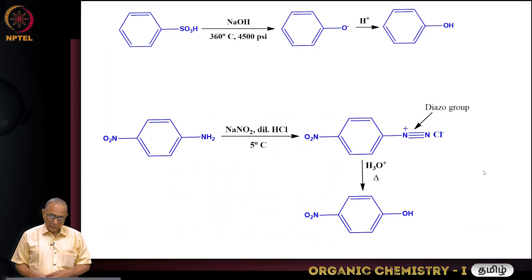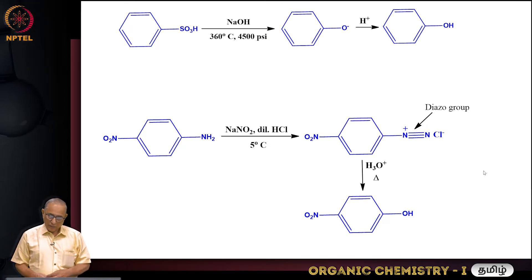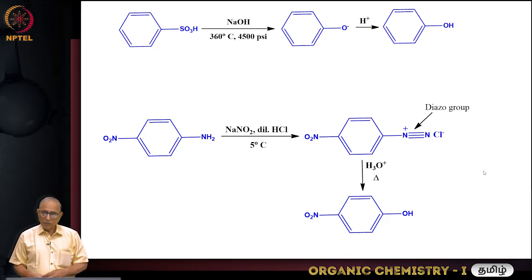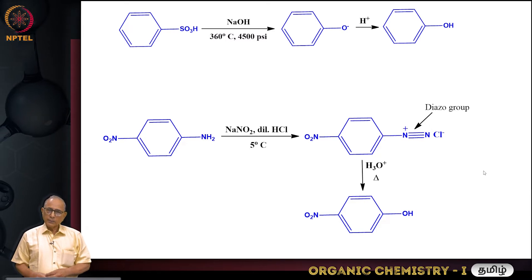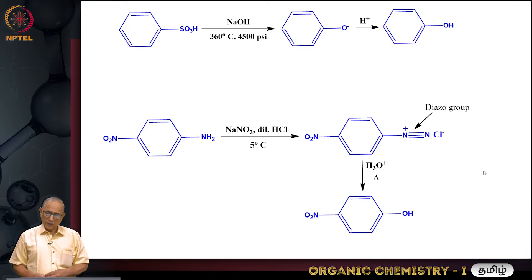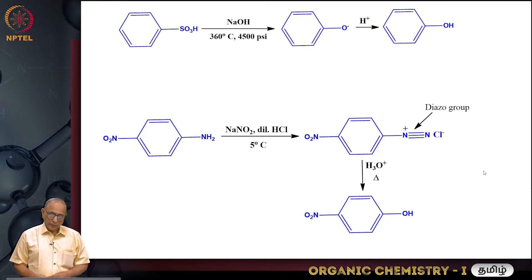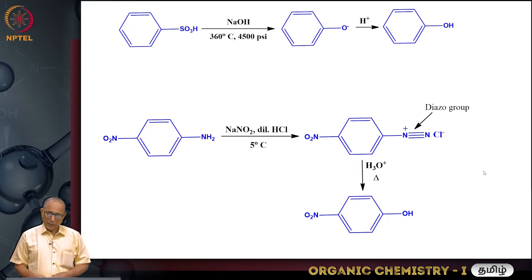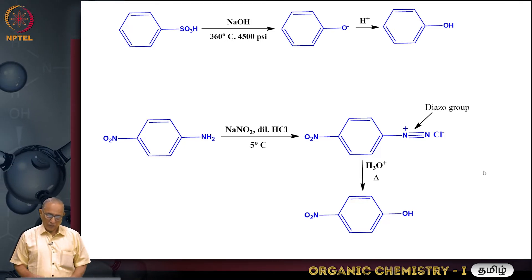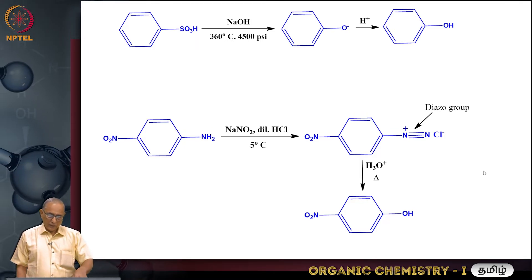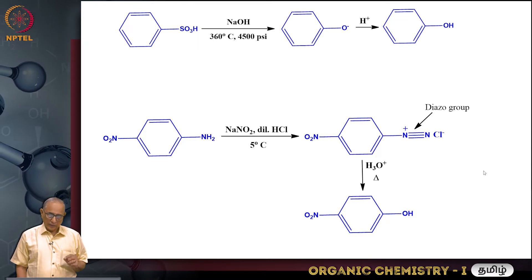In the lab, phenol is produced by a different process because the very high temperature and high pressure developed under the crust is not feasible. That is why phenol is produced by taking the corresponding amine. If you want to take para-nitrophenol, you take it with para-nitroaniline.